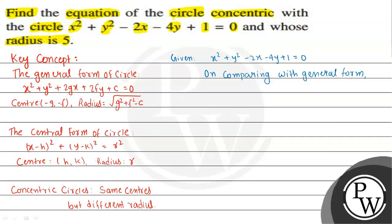Comparing with the general form: the coefficient of x gives 2g = -2, so g = -1; the coefficient of y gives 2f = -4, so f = -2; and c = 1. Therefore, the center is (-g, -f) = (1, 2).